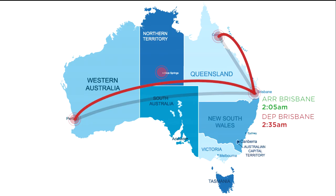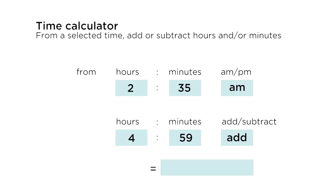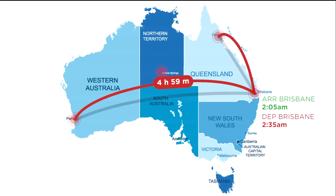She's then got a 30-minute wait for her connecting flight in Brisbane to travel to Perth, which takes 4 hours and 59 minutes. What will be the time in Perth when she lands? Her departure time is 2.35am, so it's 7.34am. But Perth is 2 hours behind, so local time there will be 5.34am.